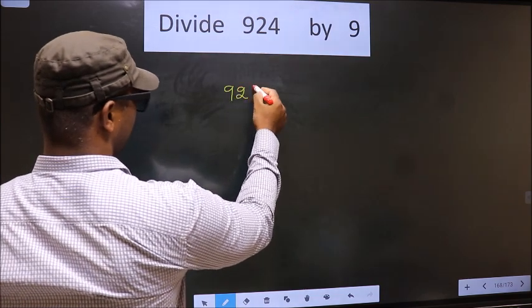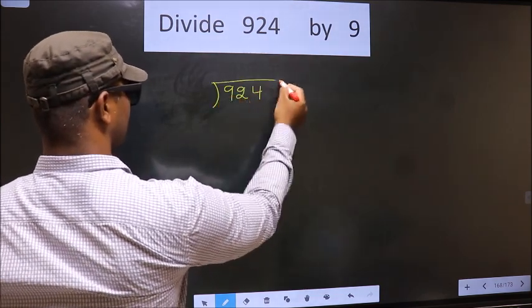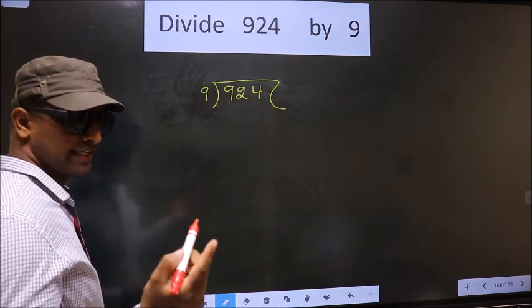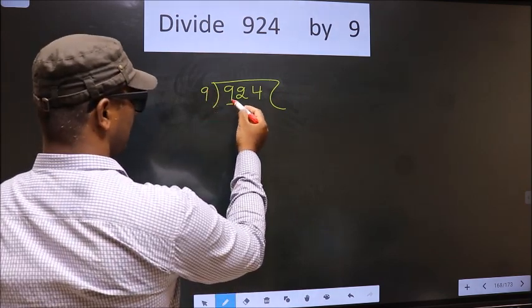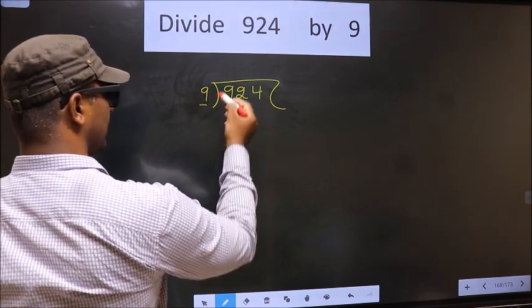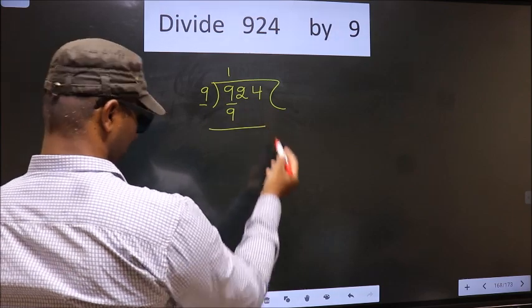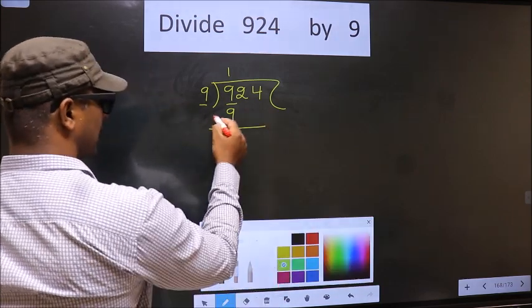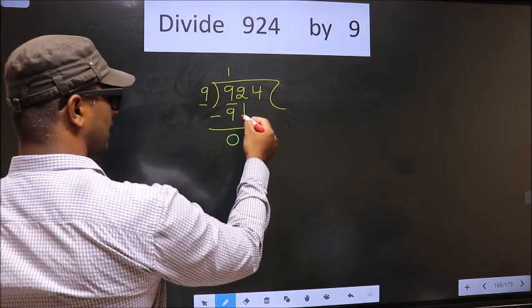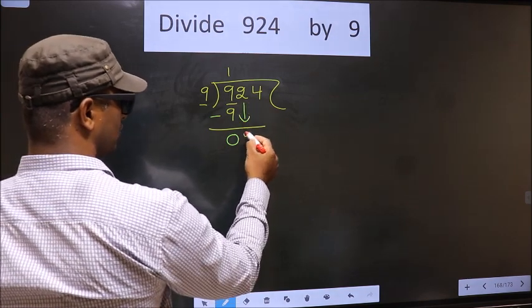That is 924, 9 here. Here we have 9. Here also 9. When do we get 9 in 9 table? 9 once 9. Now you subtract. 9 minus 9, 0. Now you bring down the beside number. So 2 down.